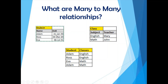Looking at this in more detail: we have the student entity with columns like name and date of birth, and three students. We also have the class entity with fields like subject and teacher — the two subjects being English and Math. For example, Adam is taking English, Ross is also taking English, Eva is taking Math, and Adam is also taking Math. So Adam is taking multiple classes.